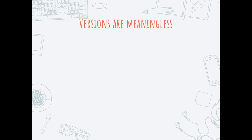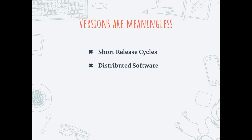If you deploy a software every three hours in a day, it's difficult to manage versions because they change constantly — there's no point documenting or manually tracking them. Software versions are meaningless because release cycles are shorter. Also, with multiple microservices, each microservice has its own version and is independently deployed, so there's no point in manually identifying and managing different versions of the software.